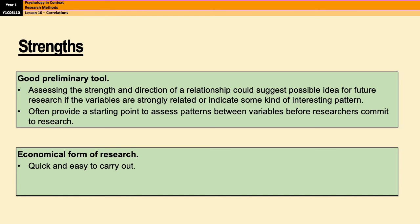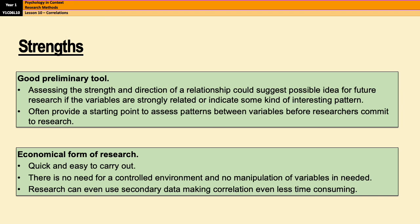And then, like I just kind of alluded to, they are quick and easy to carry out. There's no need for a controlled environment like a lab. There's no manipulation of variables. It's simple. You could even use secondary data. So secondary data is data that's been collected by somebody else for a different purpose, like government statistics or government surveys and that kind of thing. You could even use those for your correlation. So you don't even need to collect your own data, which makes correlational research even less time consuming. So it's very economical. It's very quick and easy to carry out.